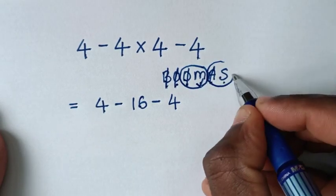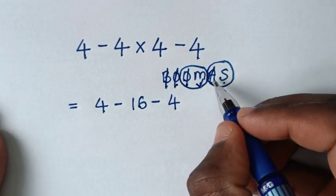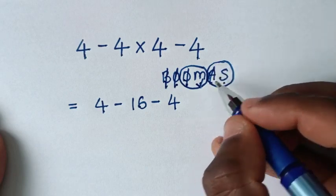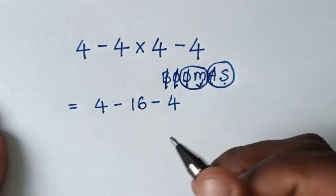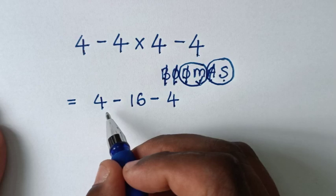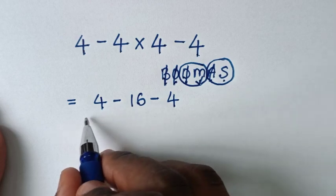Now to deal with this group of addition and subtraction. We don't have addition, we have subtractions. Two subtractions. So we deal with the subtractions from left to right.